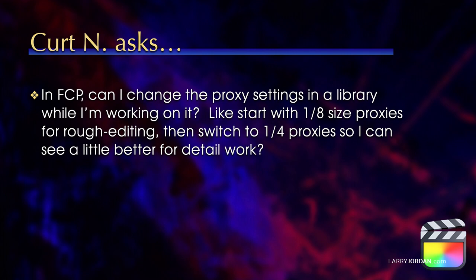So let's say that I create a whole bunch of eighth sizes for rough cuts. You can then delete all those proxies with a single mouse click and recreate proxies to be quarters. Because otherwise the situation gets out of hand — you'd have to decide: is it ProRes or H.264? Is it one-half, one-quarter, one-eighth? Suddenly Final Cut is keeping six different proxies for every clip. The storage is out of control and you've lost any benefit of using proxies. So, one proxy file per master file.